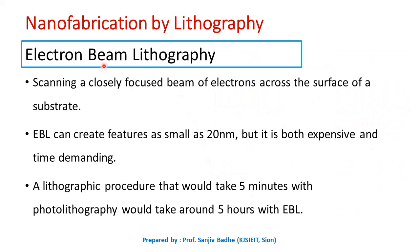Instead of light, if an electron beam is used in lithography, then it is called electron beam lithography. In electron beam lithography, the surface of the substrate — the semiconductor wafer — can be scanned with a closely focused beam of electrons. This technique can create features as small as 20 nanometers, compared to 50 nanometers in photolithography. However, electron beam lithography is very expensive and time-demanding. In photolithography, the pattern can be imprinted in 5 minutes, but it would take around 5 years with electron beam lithography. Despite this, smaller features can be obtained with electron beam lithography.